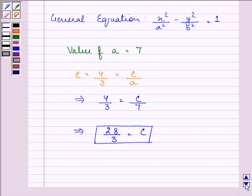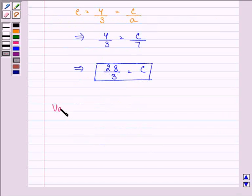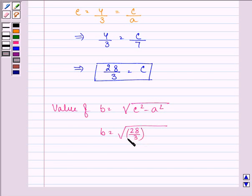Now we shall be proceeding on to find out the value of b. That is c square minus a square. We have b as c square is 28 by 3 the whole square, minus a is 7 the whole square, that is a square.